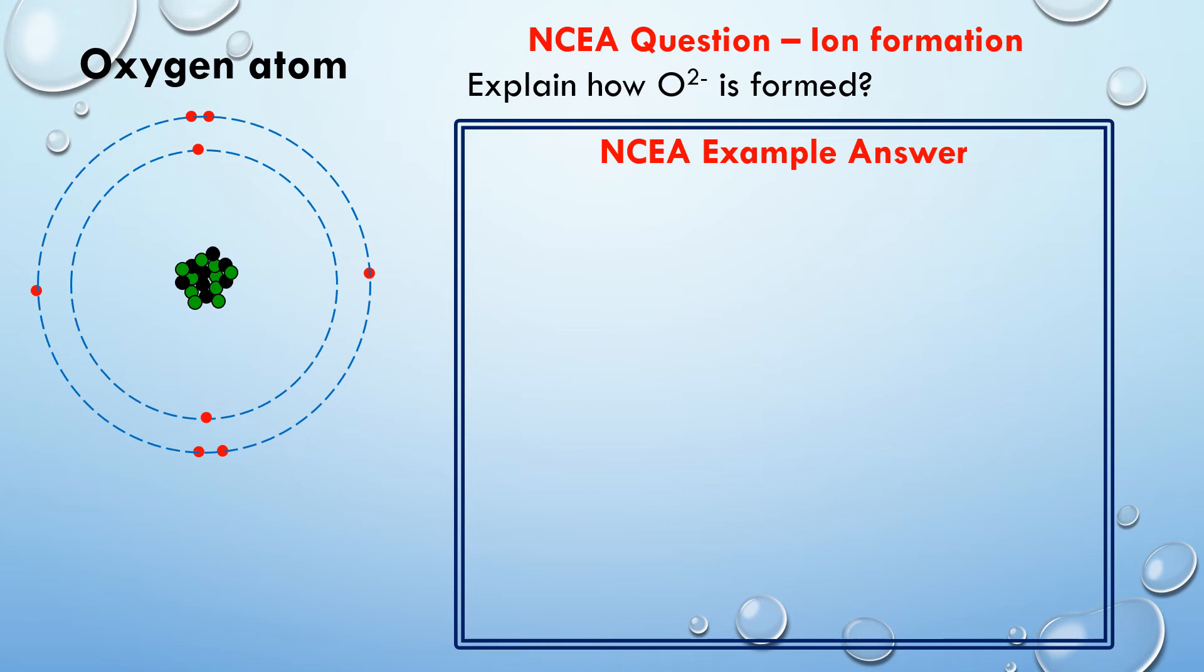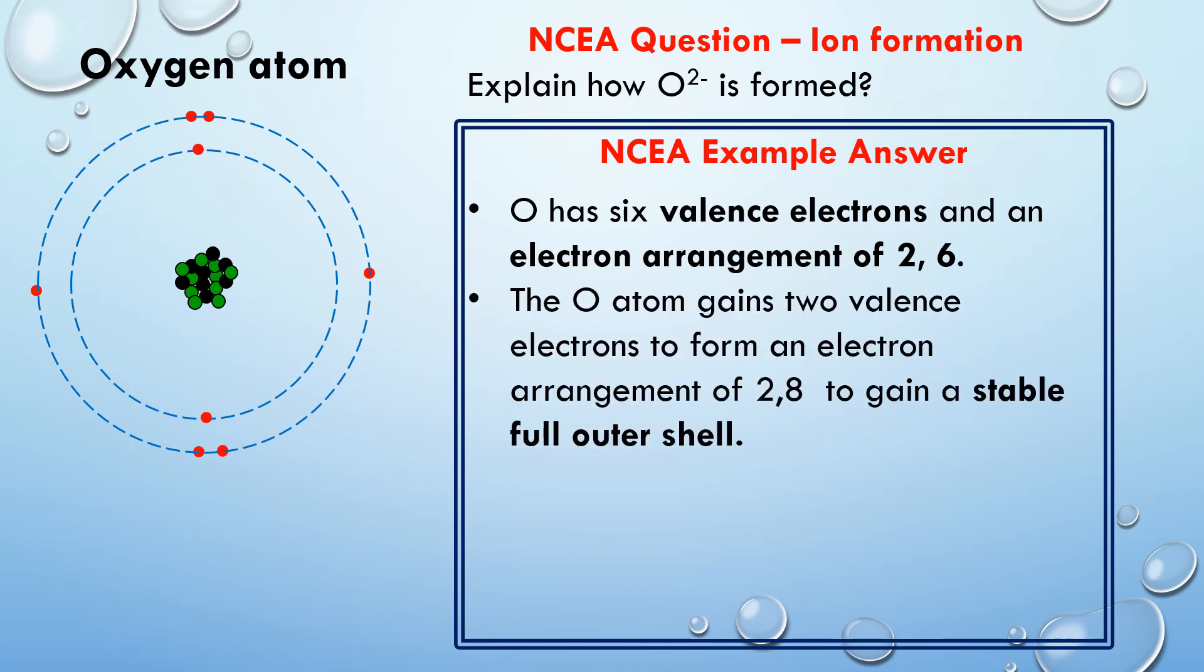So the first part I'll say is what its electron configuration of the original atom is or the electron arrangement. So it has an electron arrangement of 2,6. So therefore it's got six valence electrons. Of course, we know that the second statement now is to say, well, it needs to get a full stable outer shell. And we're going to say how it's going to do that. It's going to do that by gaining two electrons.